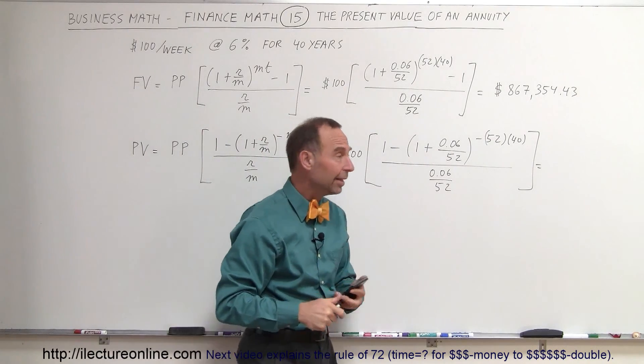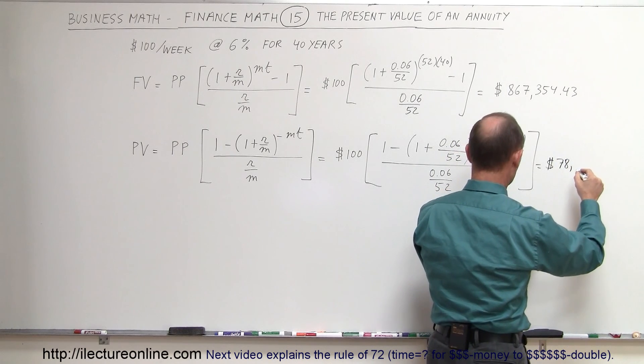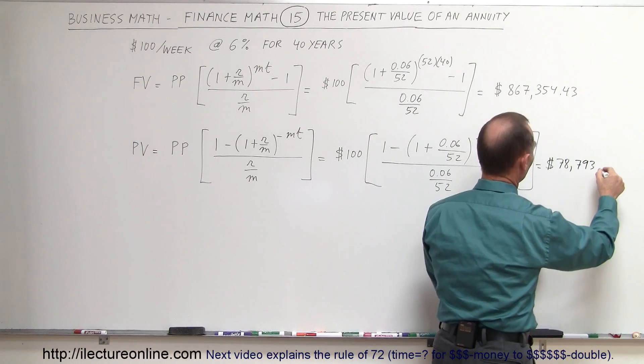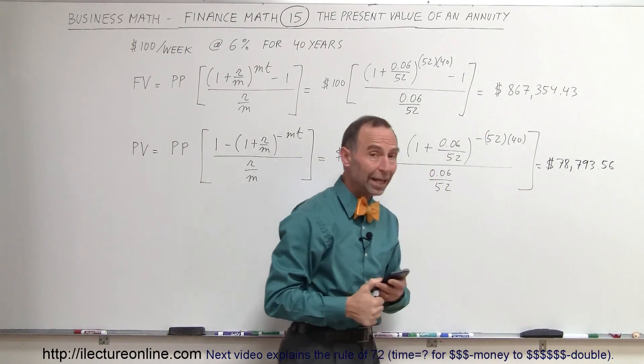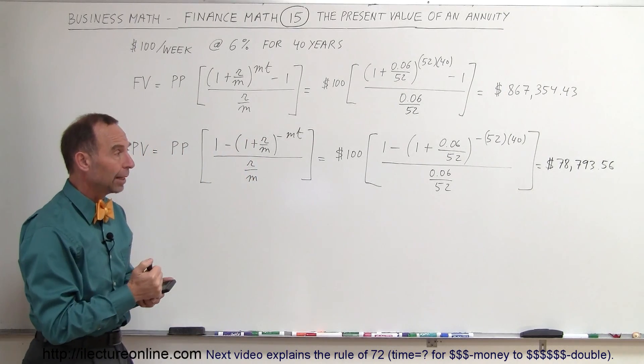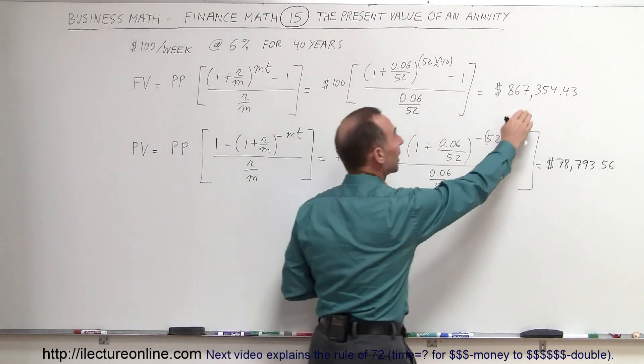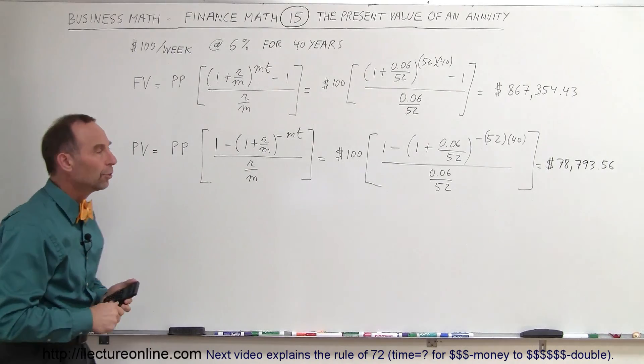And that amount then is $78,793.56. So if you had that much money today in hand and you put it into a tax-deferred plan with weekly compounding at 6%, you would end up with the same amount of money after 40 years. That's why it's called the present value of that annuity.